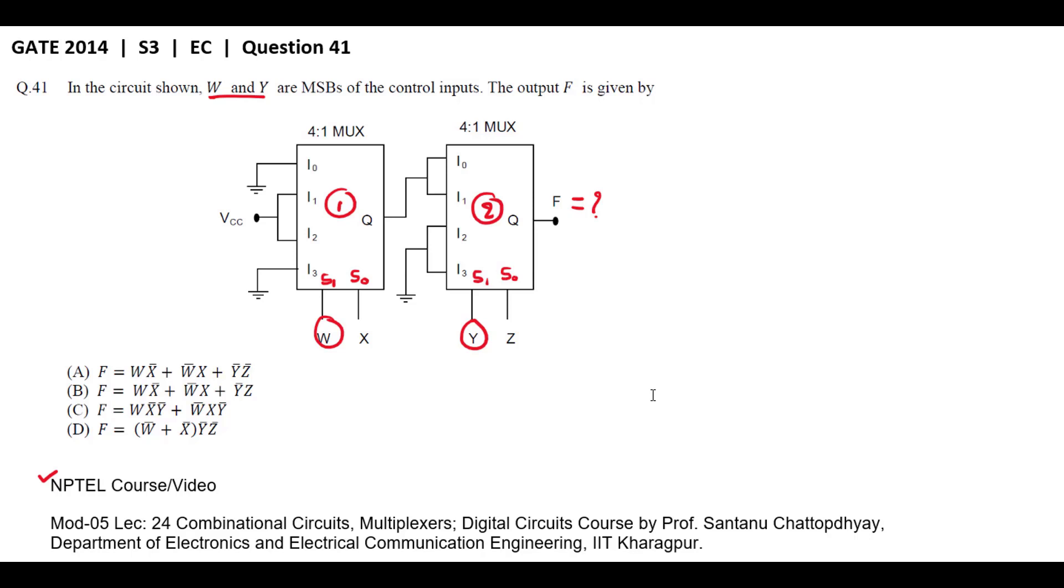The output equation for the first multiplexer I will treat as Y1. So Y1 equals to W bar X bar I0 plus W bar X I1 plus W X bar I2 plus W X I3. For this 4 by 1 multiplexer, I1 is connected to ground, so I will treat this as logic 0. Similarly, I3 is also connected to ground, so I3 input is 0. Here, I2 is connected to power supply VCC, so I will treat this as logic 1.